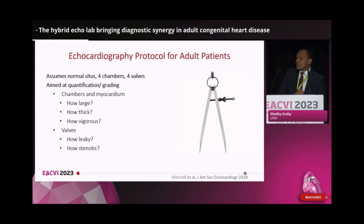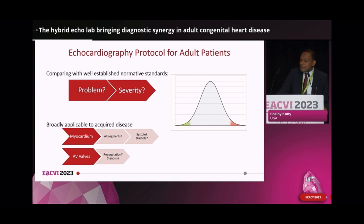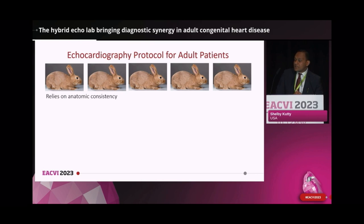So in summary, for the patient in the adult lab, in terms of cardiac chambers and myocardium, the measurements can answer how large, how thick, and how vigorous, and for the valves, how leaky and how stenotic. We have well-established standards for nearly all things we measure in the adult echo lab, and compared to these standards, we can determine if there is a problem and, if so, how severe it is. This approach is broadly applicable for acquired heart disease in adults, but it relies on a big assumption.